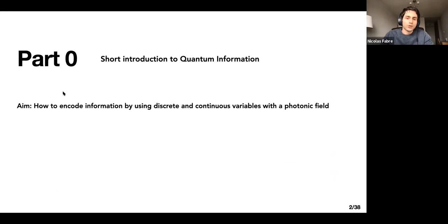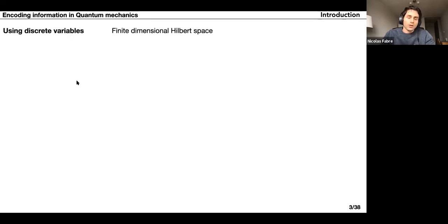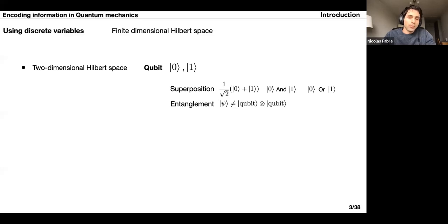I'm going to start with a short introduction to quantum information, and especially how we can encode information using either discrete or continuous variables with a photonic field. We can encode information in quantum mechanics using discrete variables, leading to states living in a finite-dimensional space. The simplest example is the two-dimensional Hilbert space case, where you can define a qubit as a set of two orthogonal states.